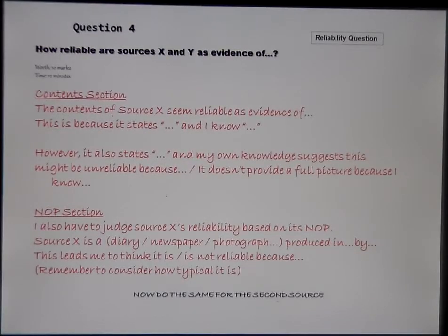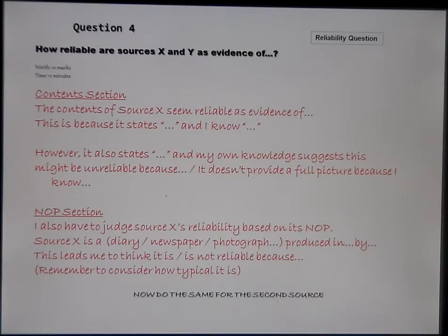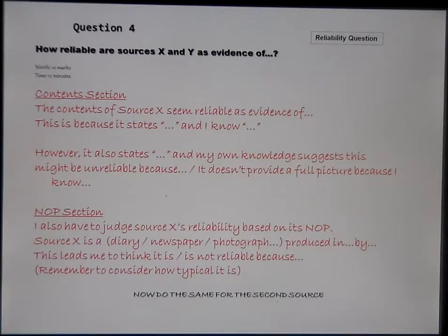Question 4 asks how reliable two sources are. For each source, deal with the contents first, then nature, origin, and purpose (NOP). For the contents section, say: 'The contents of Source X seem reliable as evidence of [topic] because it states...' — using direct quotes — and then 'I know...' comparing the source to your own knowledge. Also note where it disagrees with your knowledge or doesn't provide a full picture. For the NOP section, judge reliability based on nature, origin, and purpose evaluatively — 'These aspects of its NOP lead you to think it's reliable, but these ones suggest it's less reliable.'